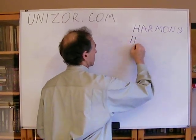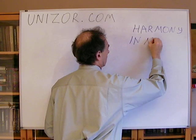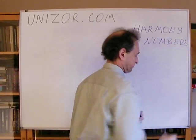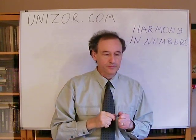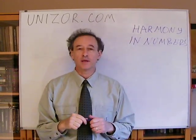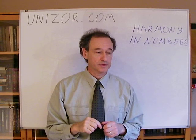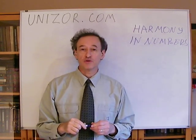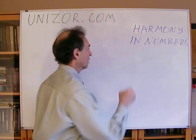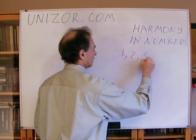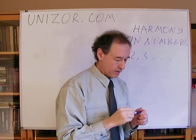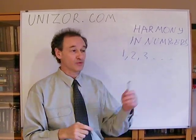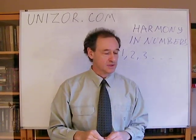Since we start algebra, we start with numbers. Let's think about how history was developed as far as numbers are concerned. The first numbers which people knew were natural numbers: one, two, three, etc. Why are they called natural? Obviously because you can find them in nature. You can count sheep — one sheep, two sheep, three sheep, etc.